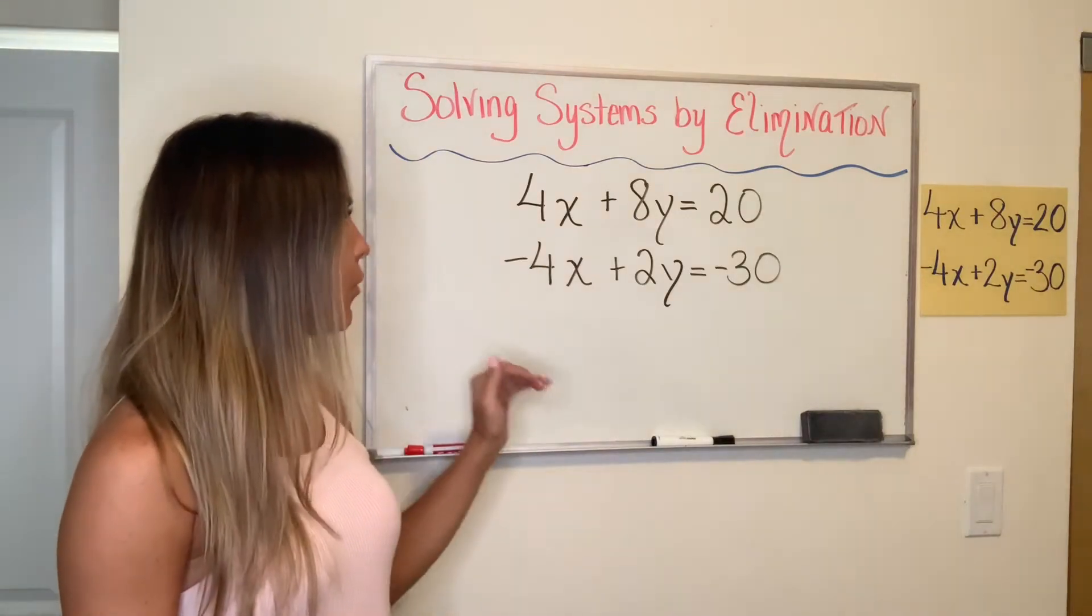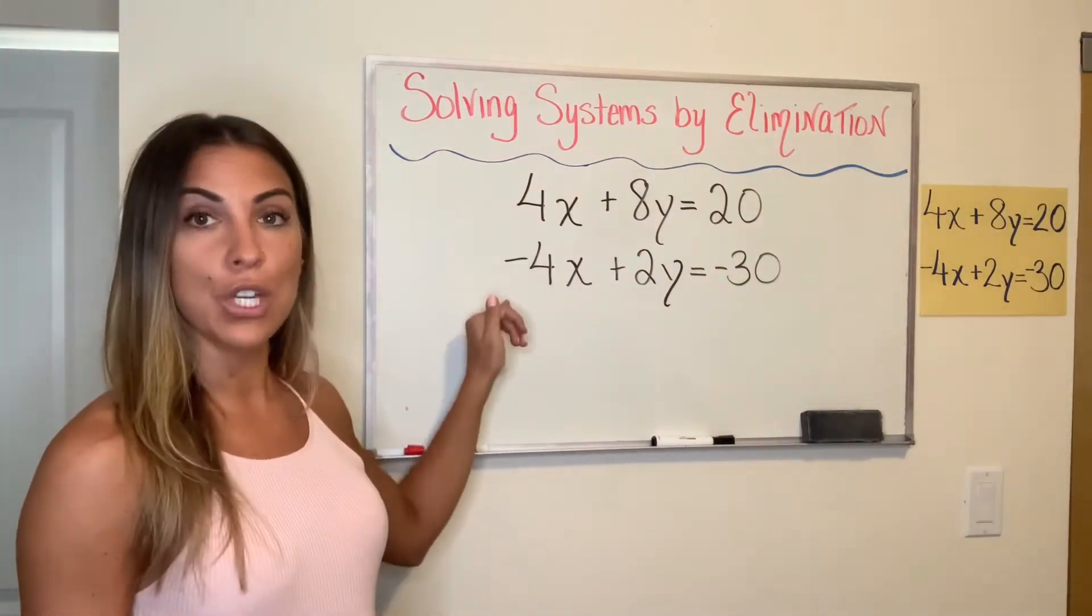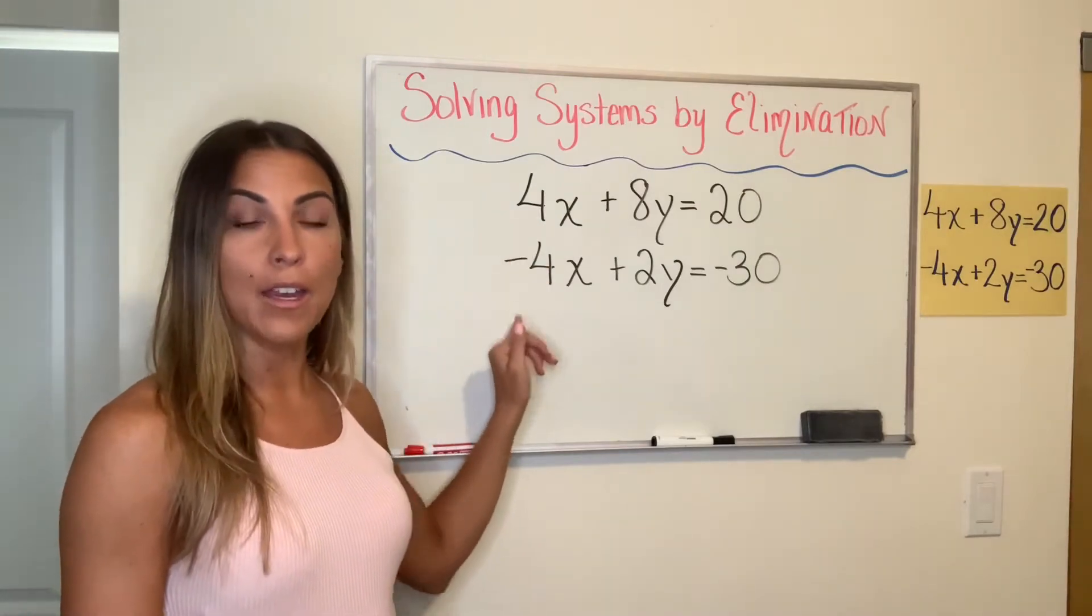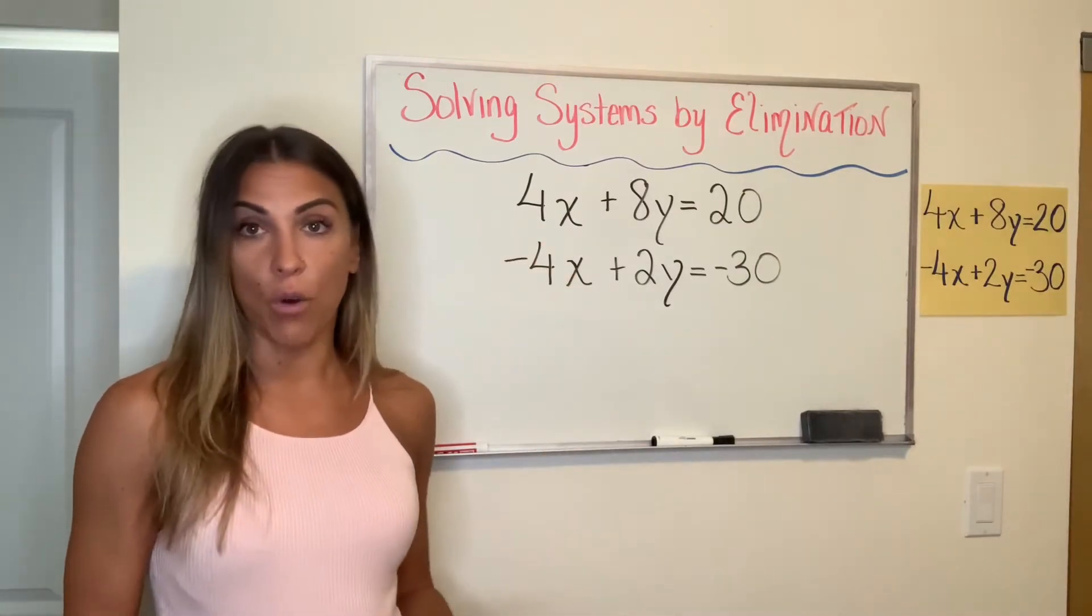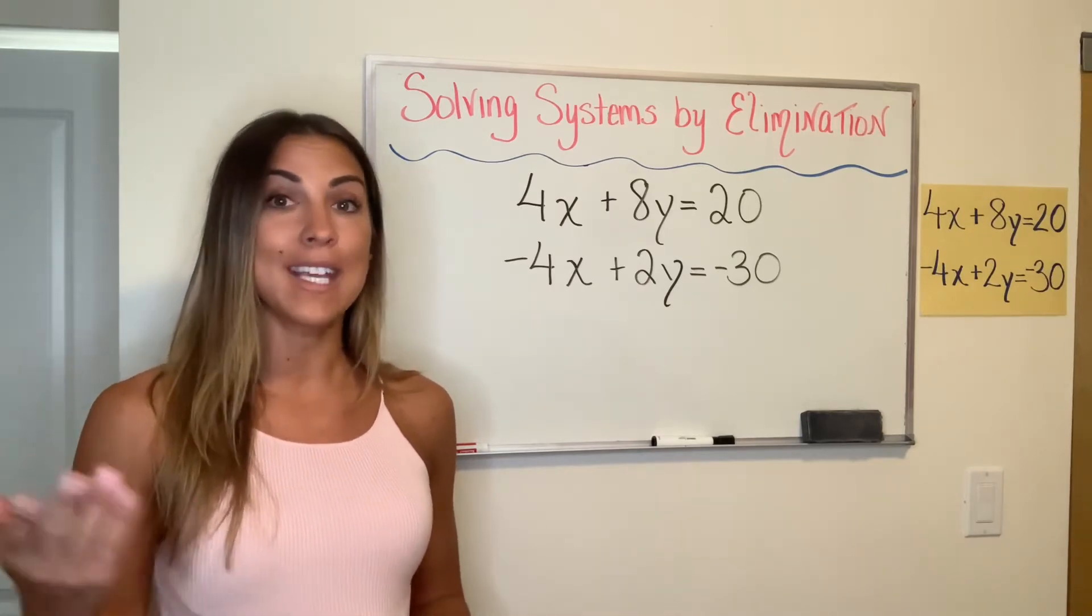So when I look at this system, the reason I'm looking for opposite coefficients is because when you add opposite coefficients together, you get zero. Anything plus its additive inverse is zero. So they're going to cancel out.